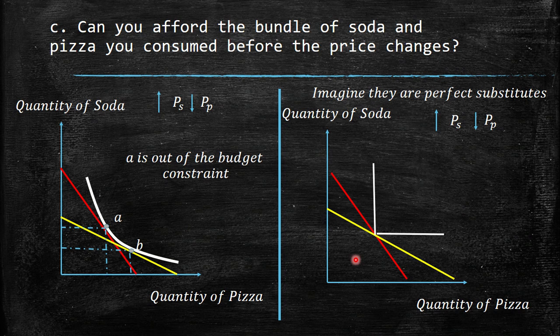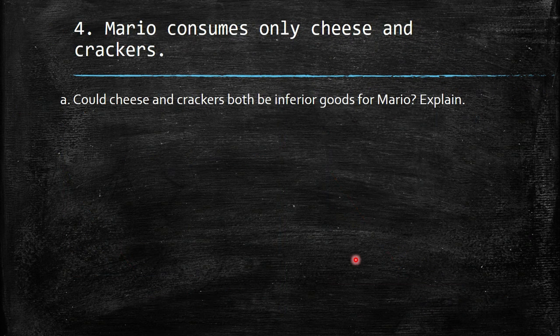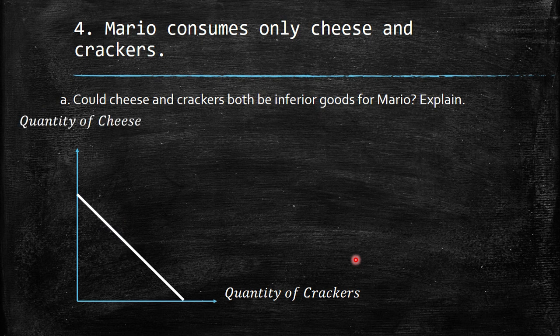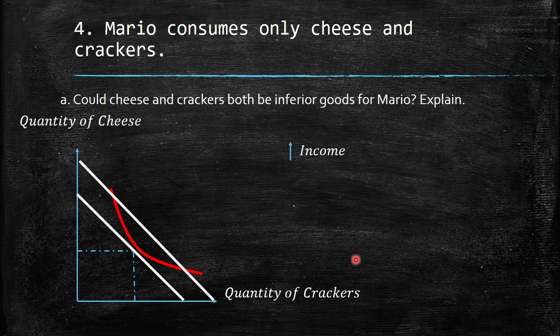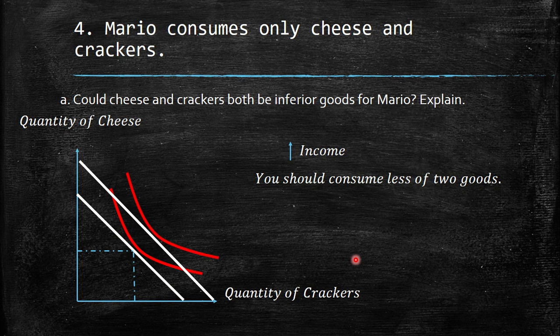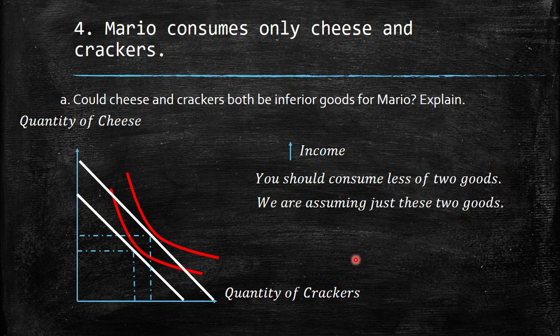Mario consumes only cheese and crackers. Could cheese and crackers both be inferior goods for Mario? When we have quantity of crackers and quantity of cheese and income increases, you should consume less of both goods — that is the definition of inferior goods. However, since we are assuming just these two goods, this is impossible. At least one of them should be a normal good to make that representation.